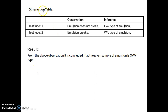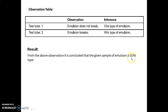Observation table: In test tube 1 (measuring cylinder 1), the emulsion does not break — inference: O/W type emulsion. In test tube 2 (measuring cylinder 2), the emulsion breaks — inference: W/O (water-in-oil) type emulsion, with water as the internal phase and oil as the external phase. Result: from the above observations, it is concluded that the given sample is an O/W type emulsion — oil-in-water — in which oil is the internal phase and water acts as the external phase. Thank you.